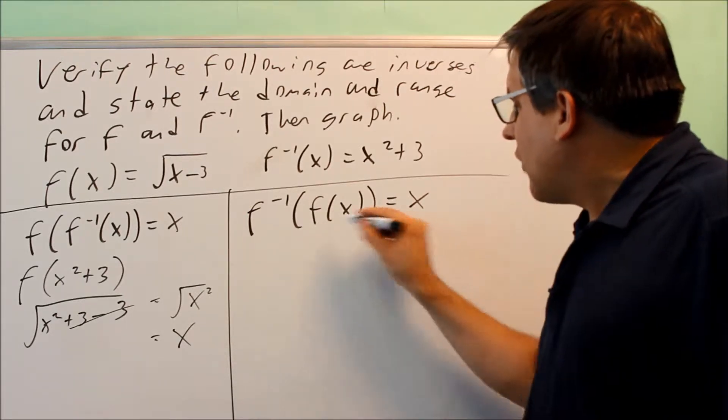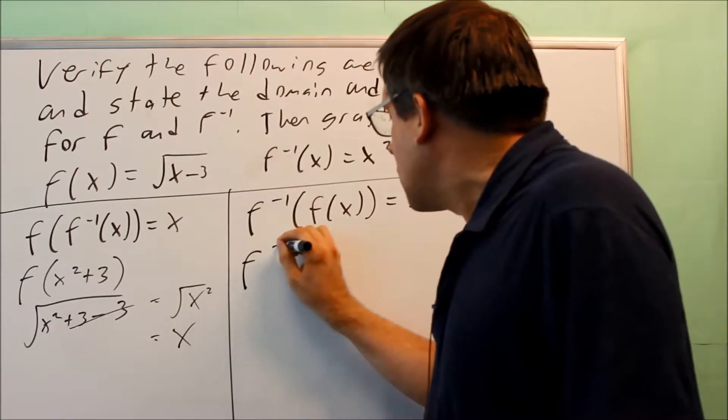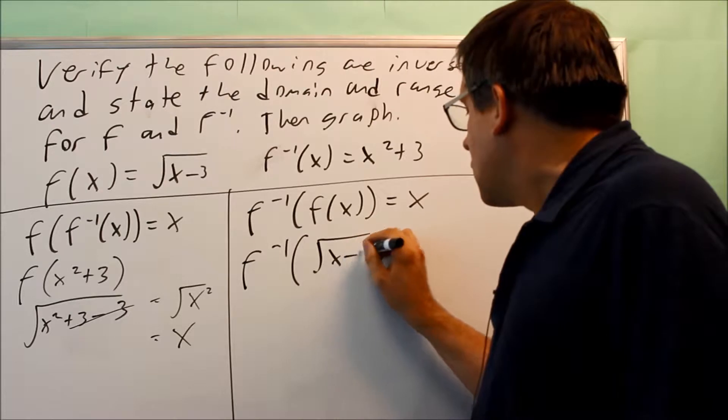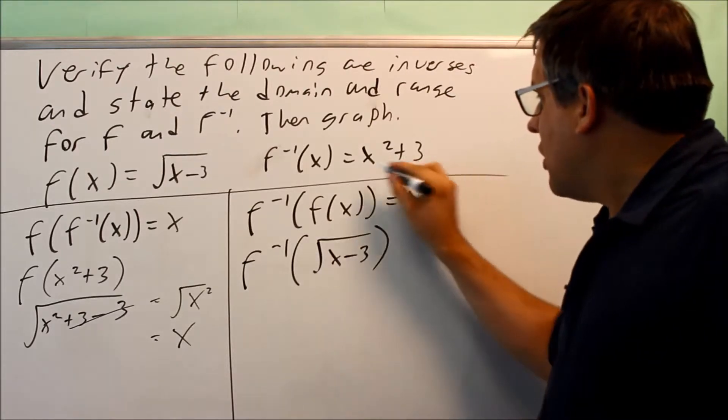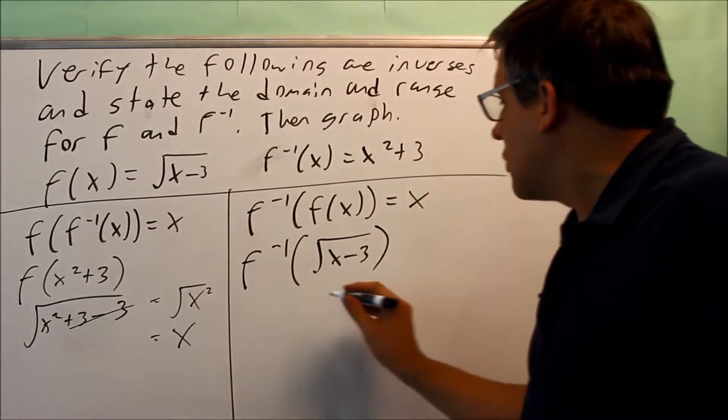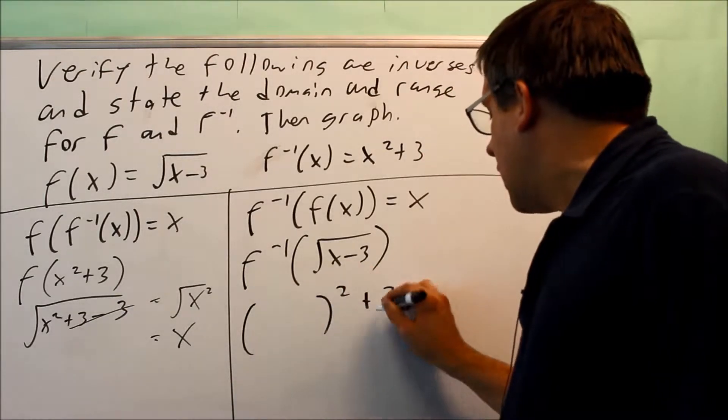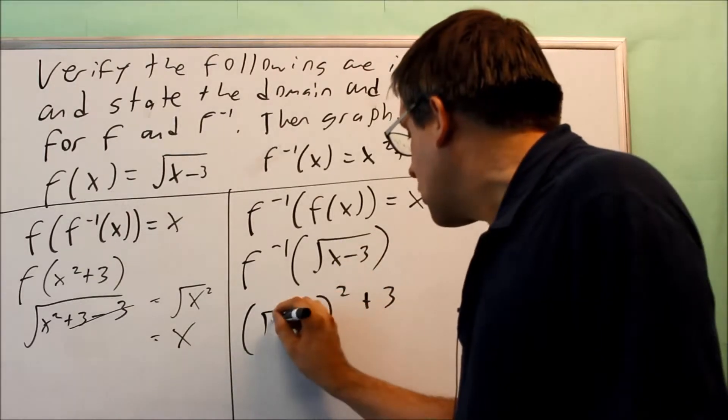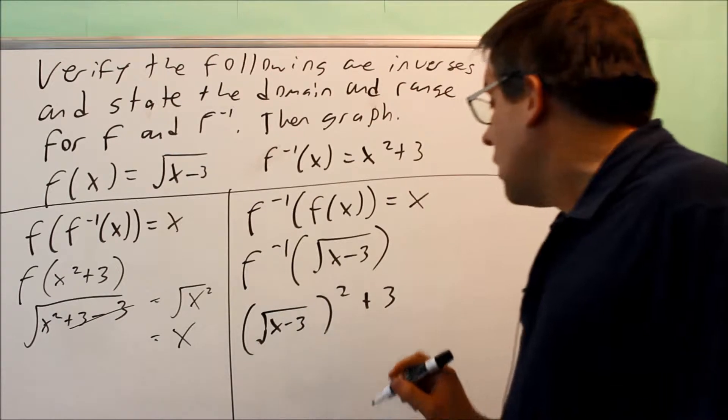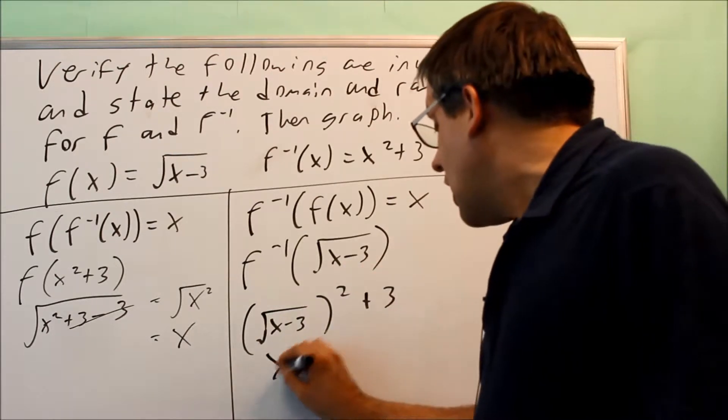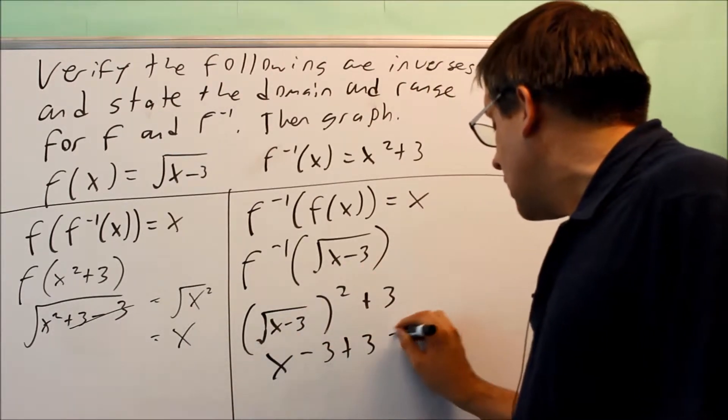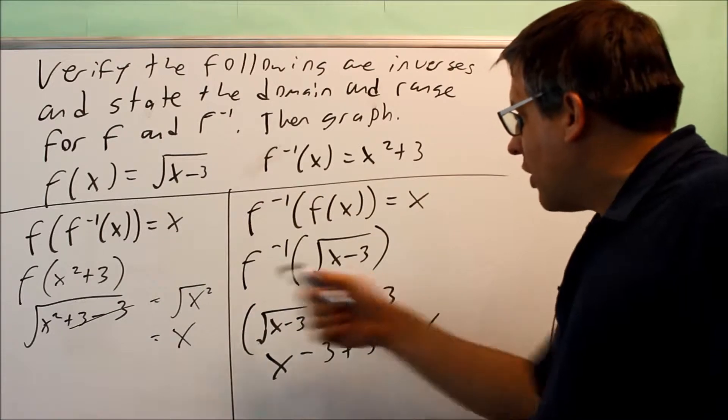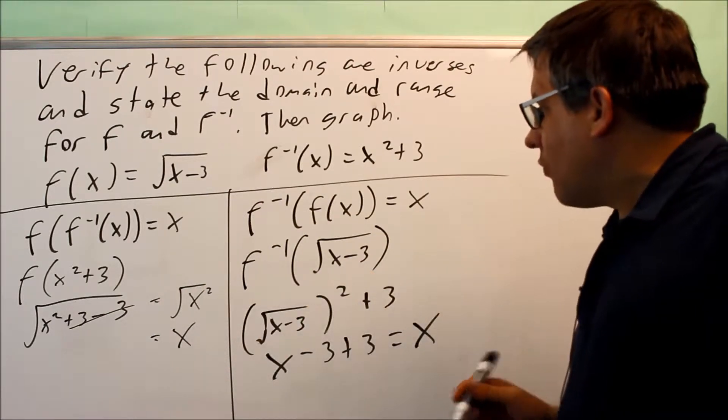Now this one, we're going to put f of x inside the inverse here. So I have the inverse and I'm going to put in f of x inside. So f of x is square root of x minus 3. I'm going to put this into my inverse. So the template is I have something squared and I have plus 3. The space inside here, instead of x, I'm going to put in the square root of x minus 3. The square root and the square are going to cancel and you get x minus 3 plus 3. Once again, that does simplify to x. We've done both sides. We've verified that both of these are going to be, in fact, x.